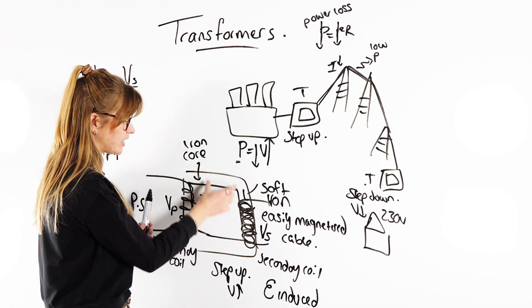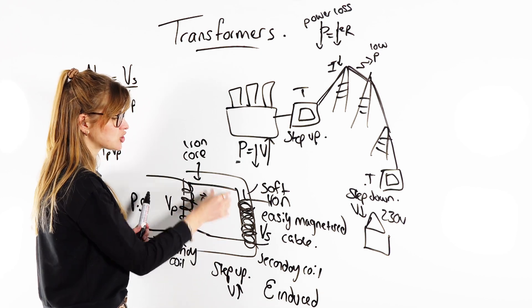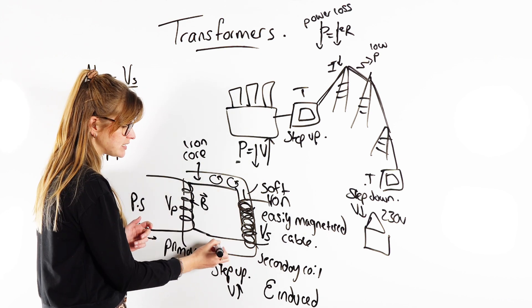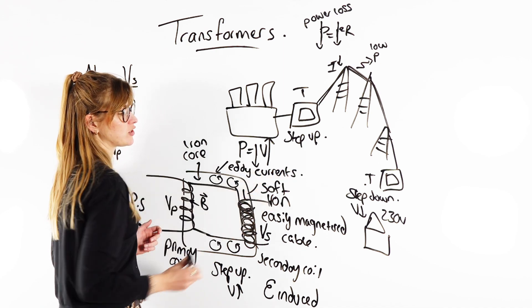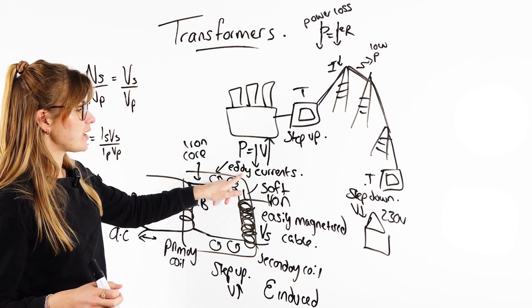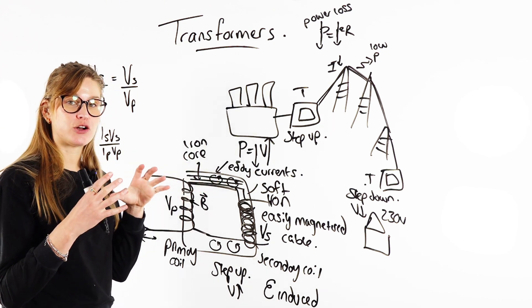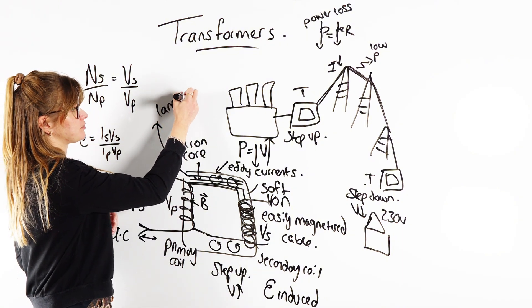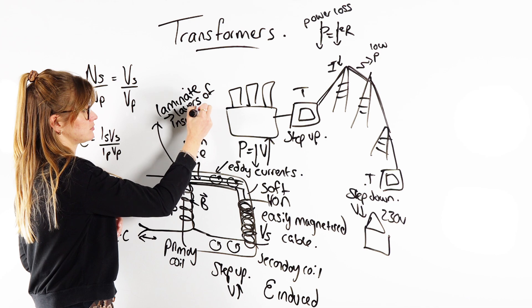A problem with transformers: if you think about it, the iron core is a conductor with a changing magnetic field inside it. Anytime we have a changing magnetic field in a conductor, there's going to be an EMF induced. What we get are things called eddy currents — little loops of current inside the transformer core. The way to reduce eddy currents is to laminate the iron core, meaning we put layers of insulation inside the iron core to reduce the formation of those currents.